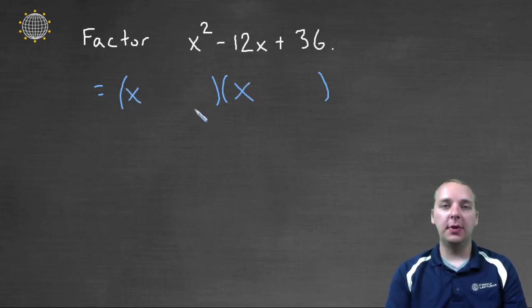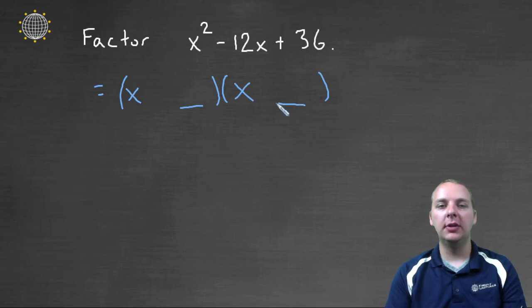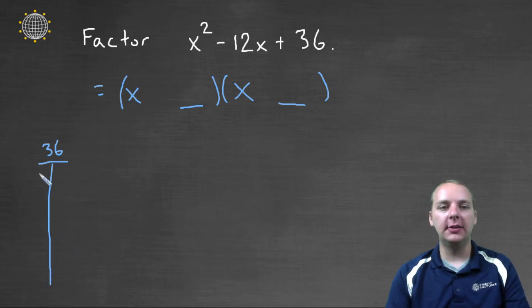And then I can focus my attention on just the last two numbers. I know they have to multiply to be 36 and add to be -12. So I'll take the 36 and write down everything that could multiply to 36.